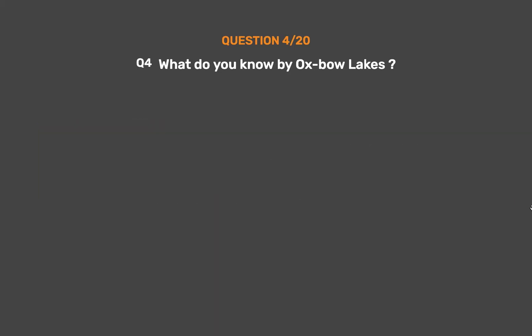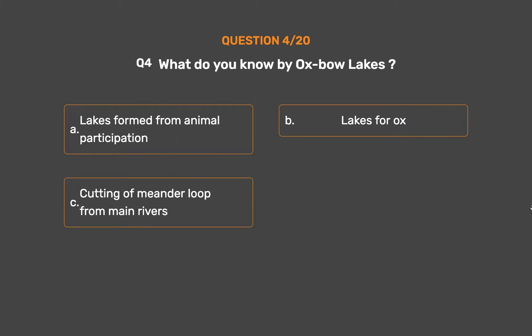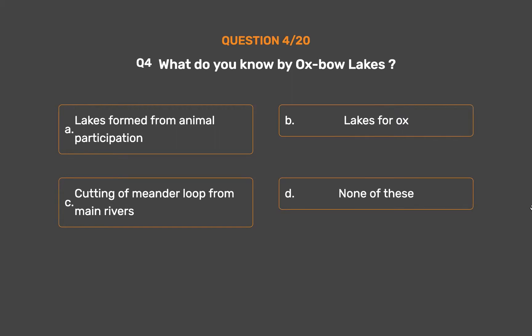Question No. 4: What do you know about oxbow lakes? Option A: Lakes formed from animal participation. Option B: Lakes for rocks. Option C: Cutting of meander loop from main rivers. Option D: None of these.